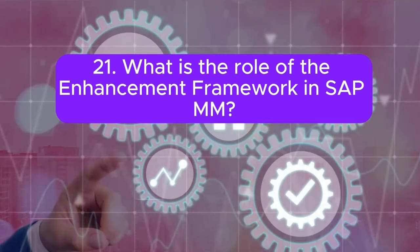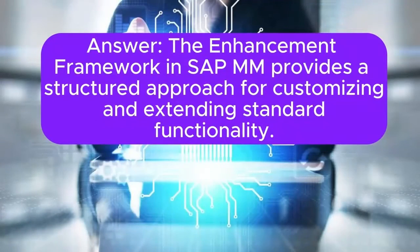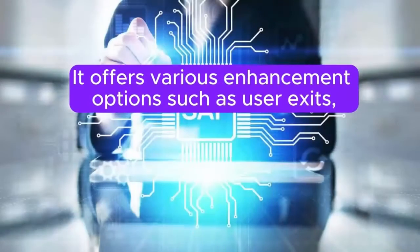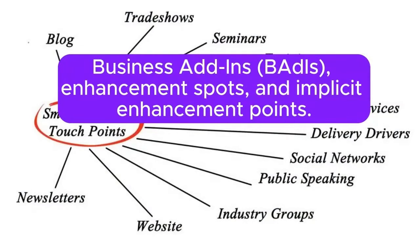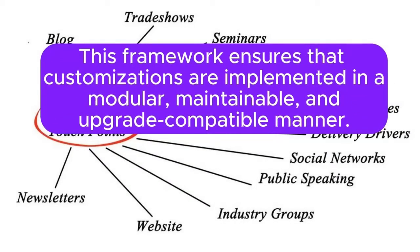What is the role of the Enhancement Framework in SAP MM? The Enhancement Framework in SAP MM provides a structured approach for customizing and extending standard functionality. It offers various enhancement options such as user exits, Business Add-Ins (BAdIs), enhancement spots, and implicit enhancement points. This framework ensures that customizations are implemented in a modular, maintainable, and upgrade-compatible manner.